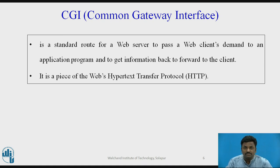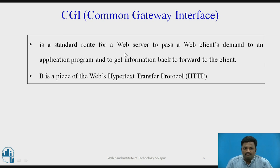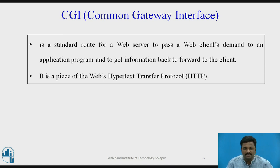Before servlet, there was something called Common Gateway Interface (CGI). To understand why there is a need for servlet, we will use this slide. CGI is a standard for a web server to pass a web client demand to a web application program. It is similar to servlet but was introduced earlier. It responds to a client and is a piece of the web's Hypertext Transfer Protocol, HTTP. It works on HTTP requests. There are some drawbacks with CGI which we will come to soon.